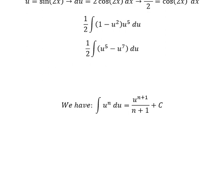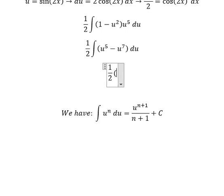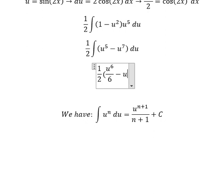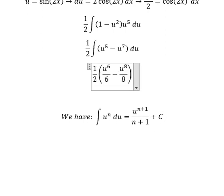And now we have one half times u to the power of 6 over 6 minus u to the power of 8 over 8, and then I will add the constant C.